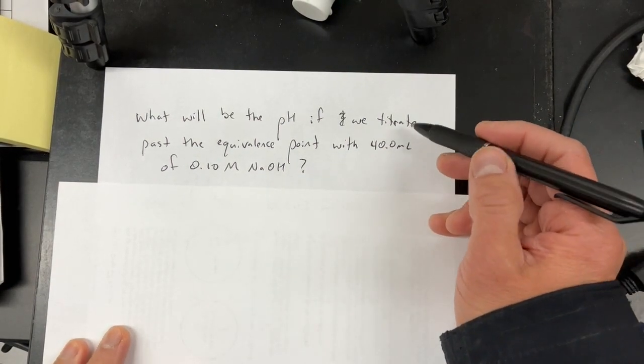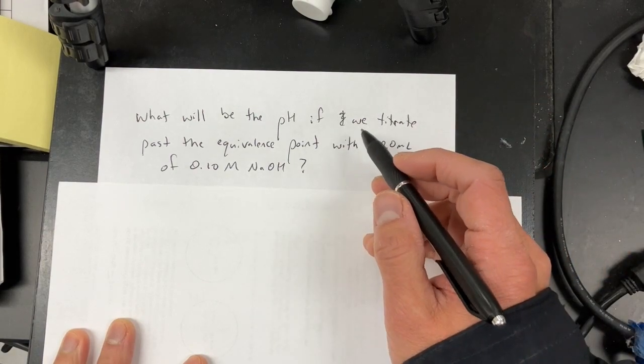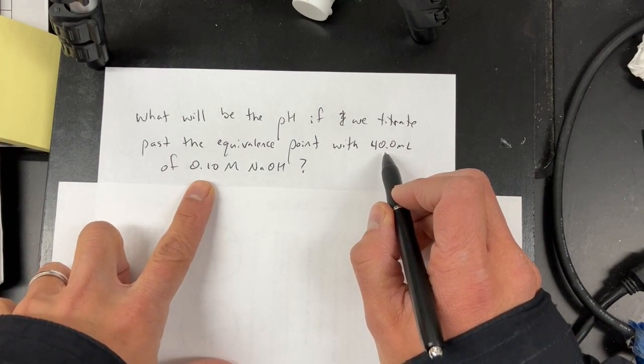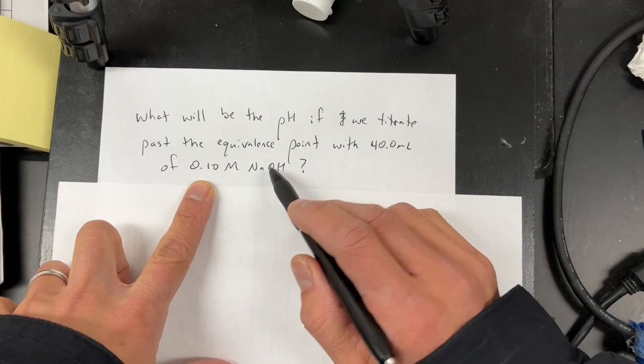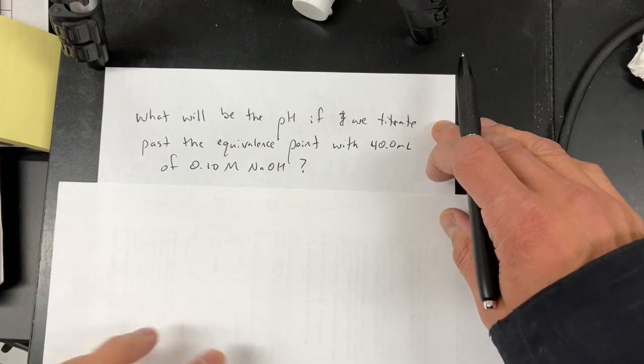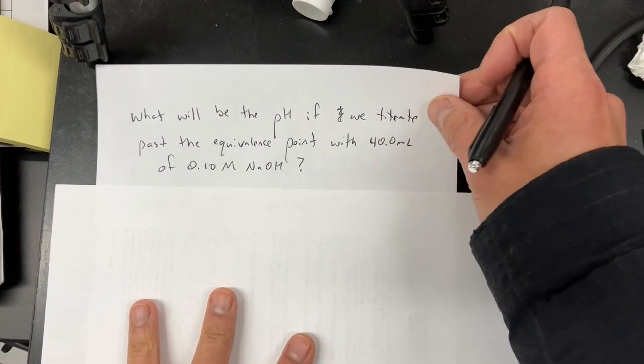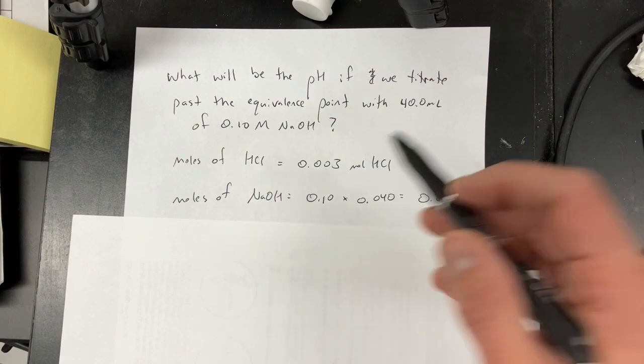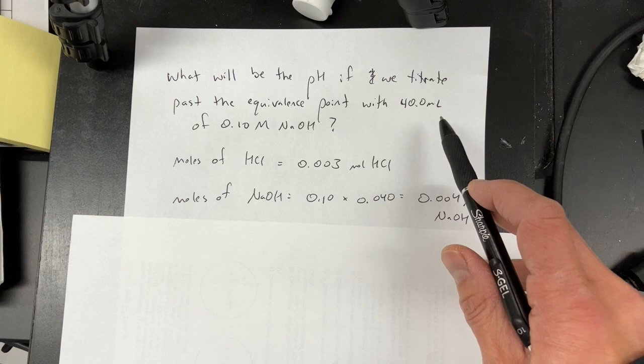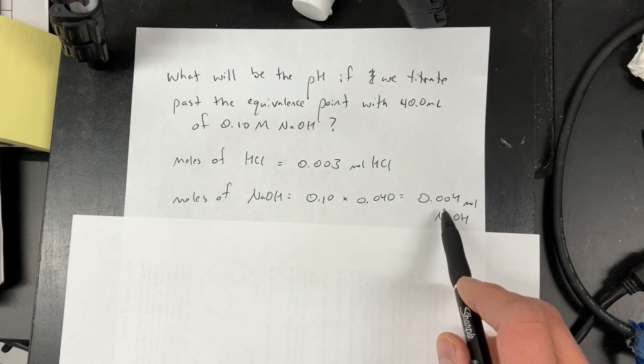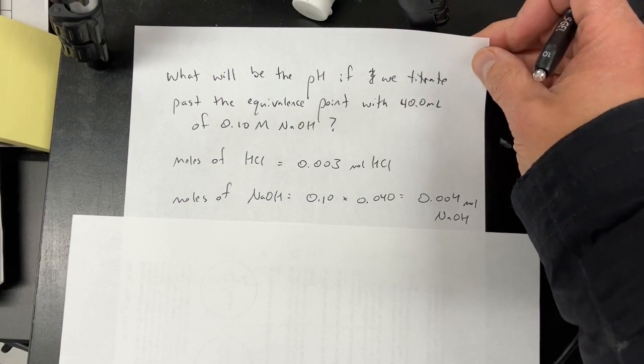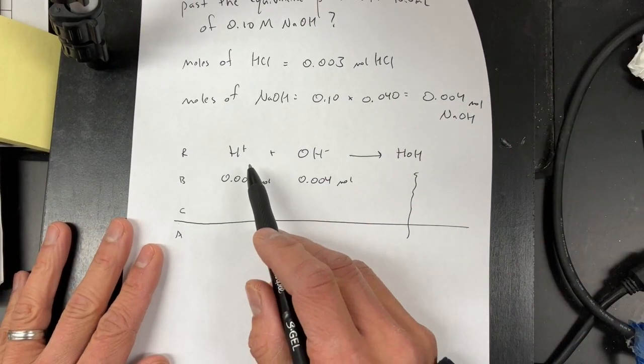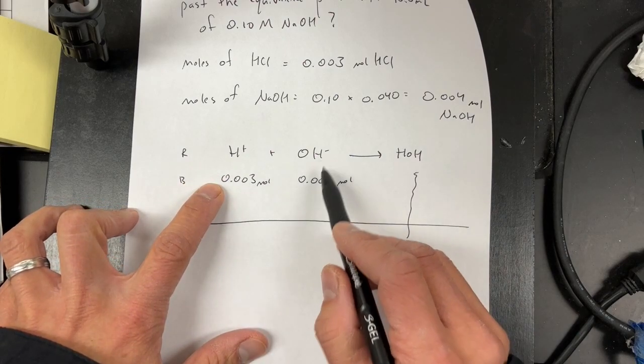And you can do this also after the equivalence point. So, if I have the same solution as before, the HCl solution, and I go past the equivalence point, and I use 40 milliliters of 0.1 molar NaOH. So, if I want to figure out the pH of this solution, it's the same process. We can just go ahead and I have my moles of HCl, which I calculated from before. Moles of NaOH, molarity times liters. So, I have 0.004 moles of NaOH. And then, if I use my Rebecca chart, I can start off by saying I have H+, 0.003, OH- is 0.004.